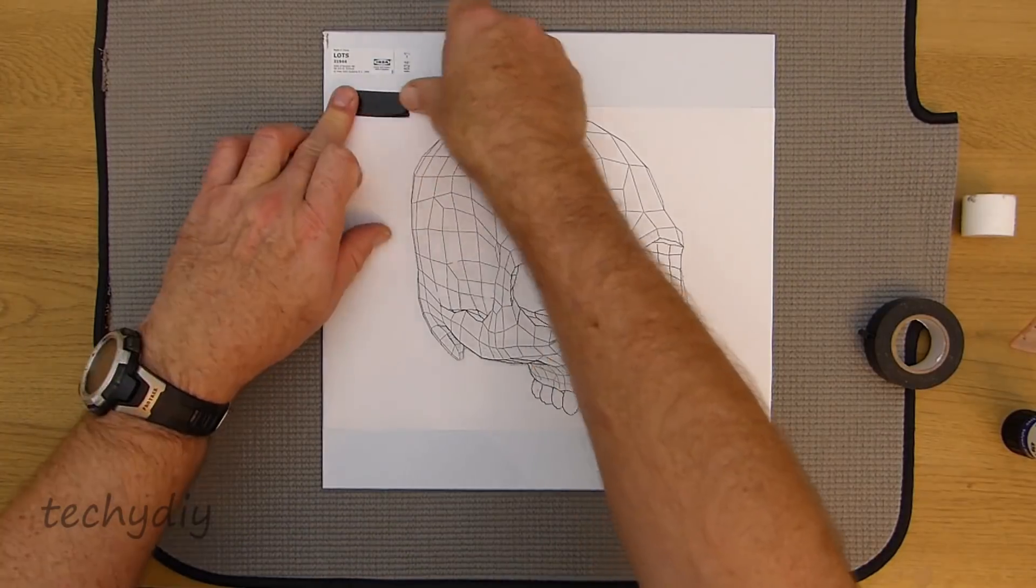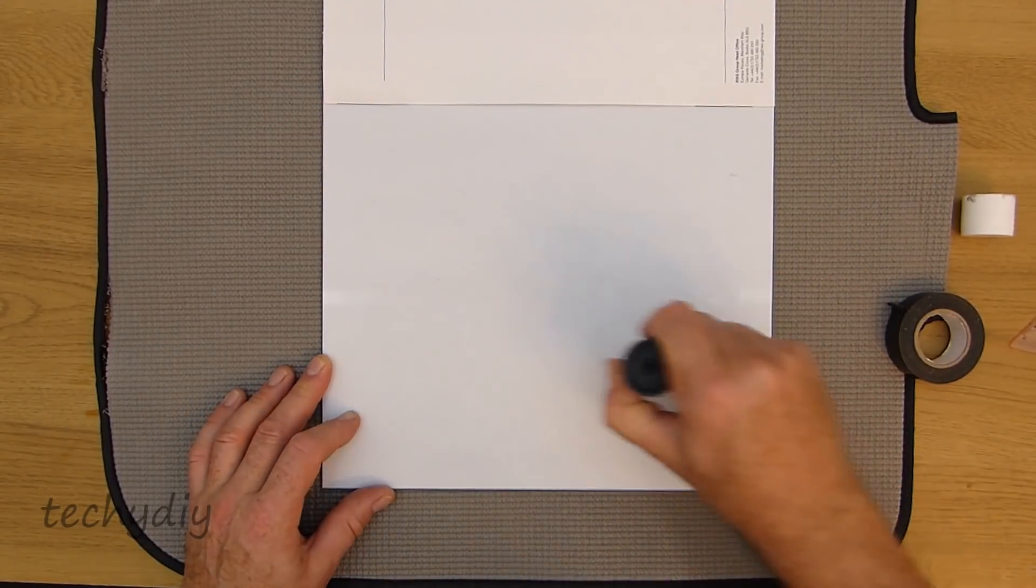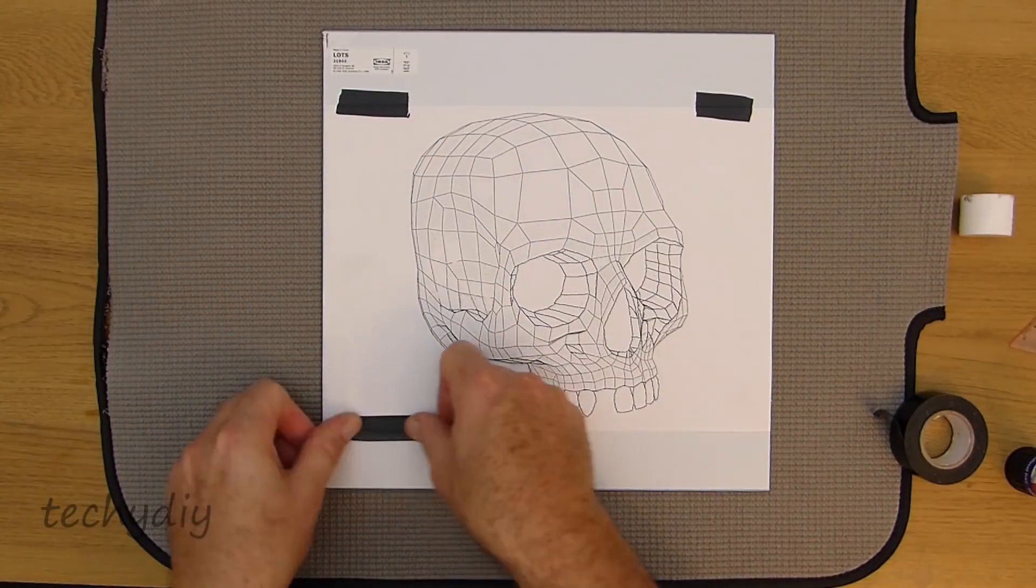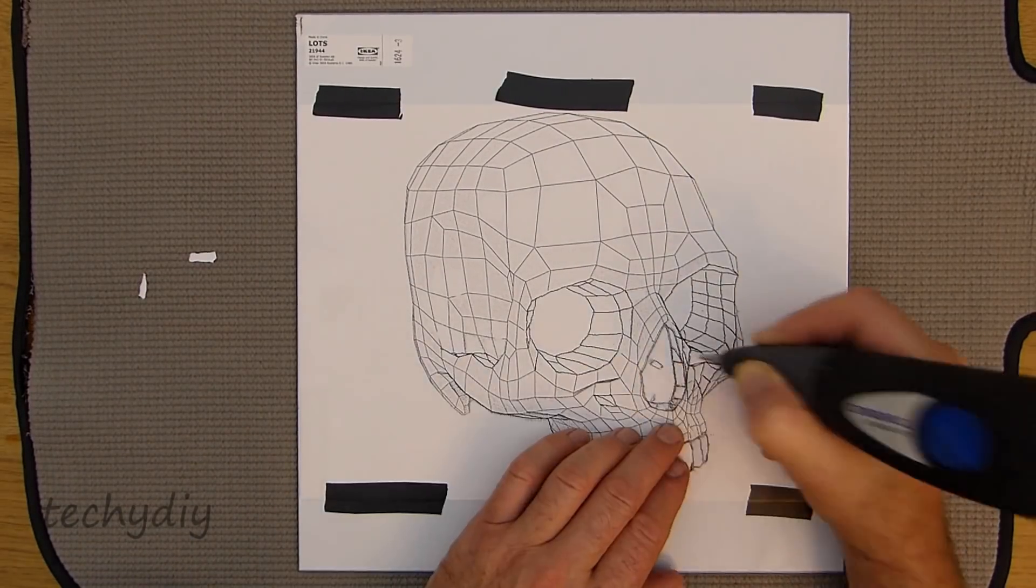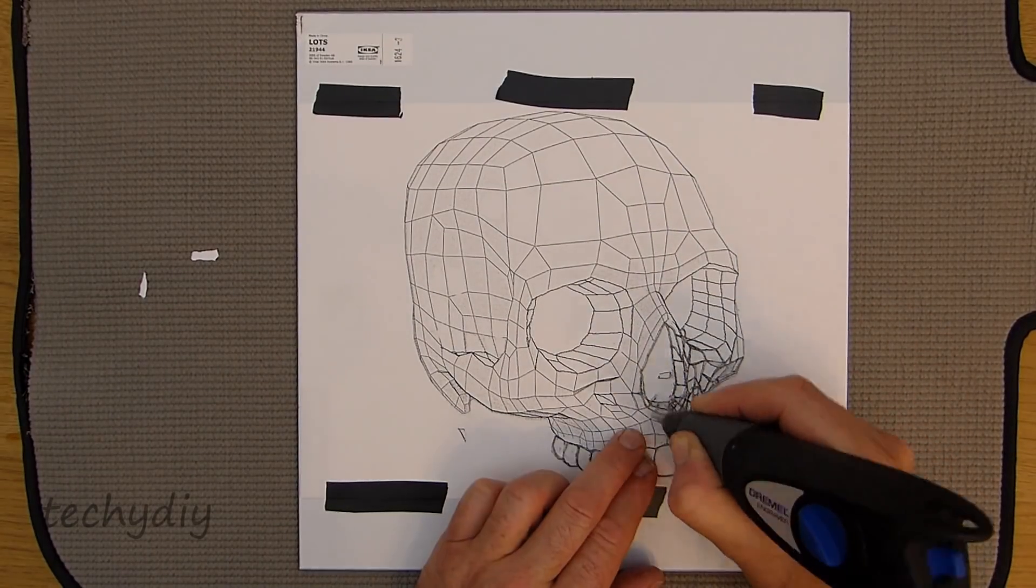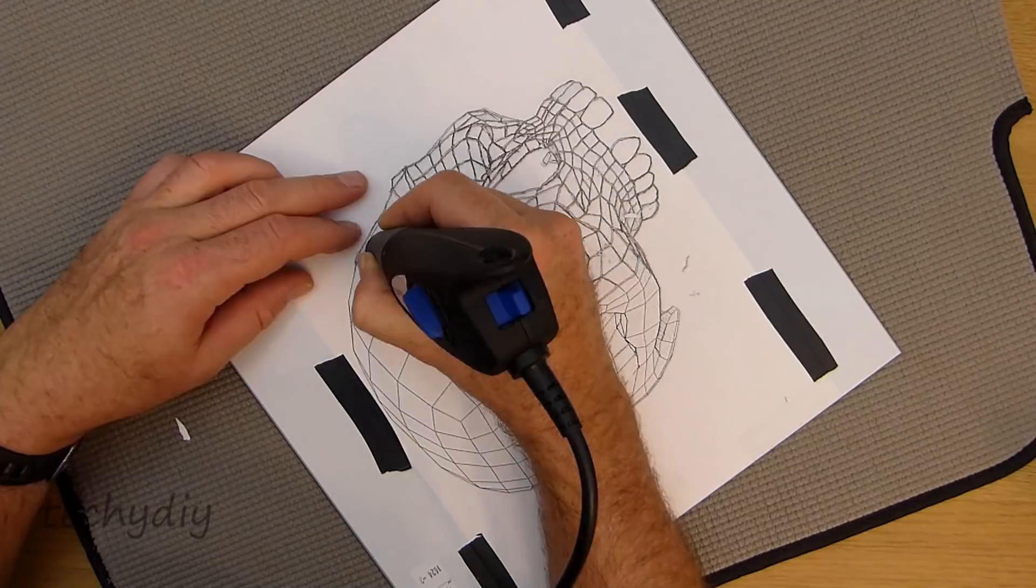I decided to replace the image on the mirror with a 3D skull design. The skull image is taped to the back of a new mirror tile. It's stuck down with water soluble glue and then I used a Dremel engraver to trace the lines on the image.